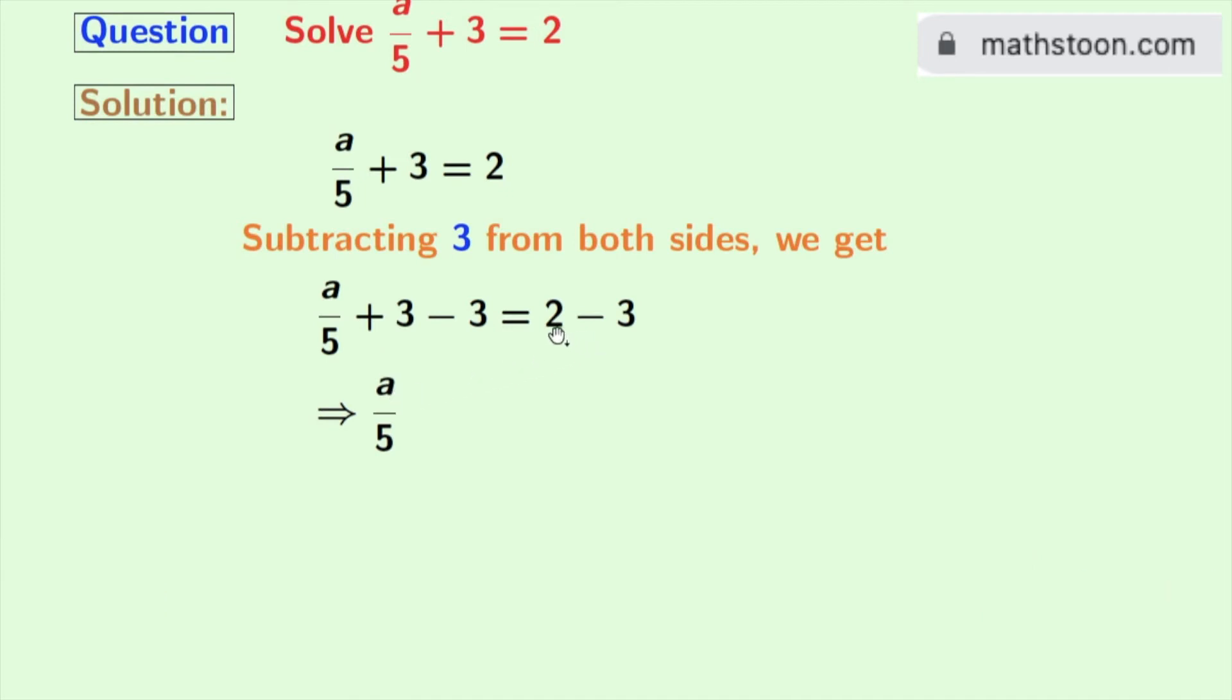And in the right hand side, we have 2 minus 3, which is minus 1. So, we get minus 1.